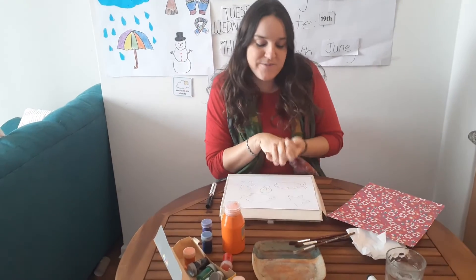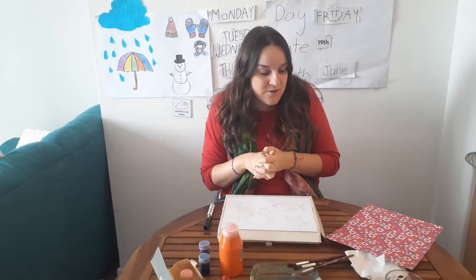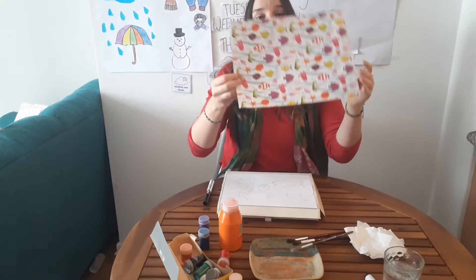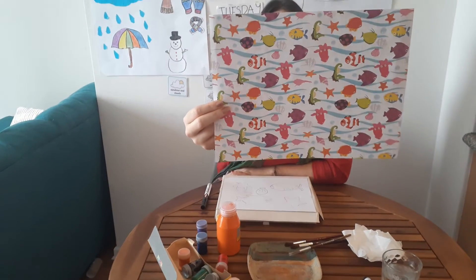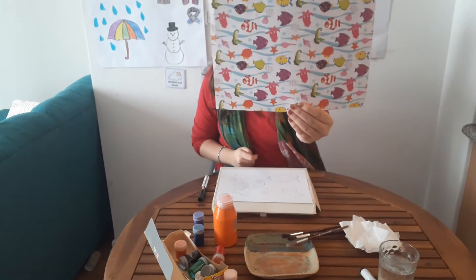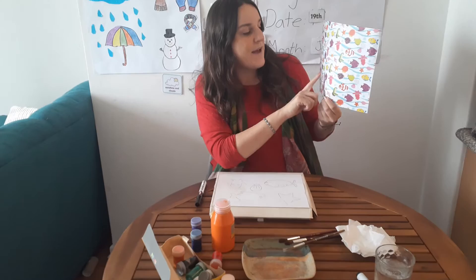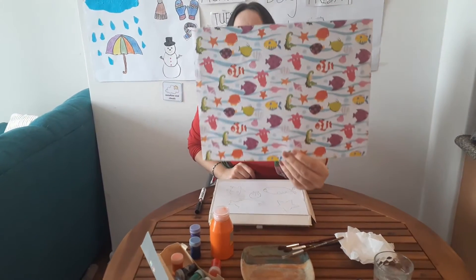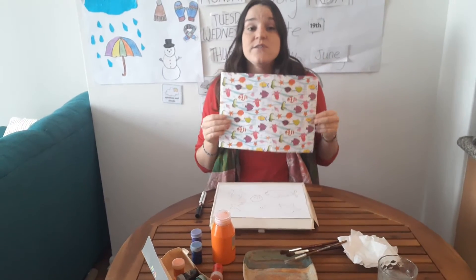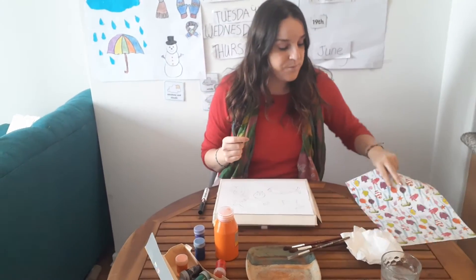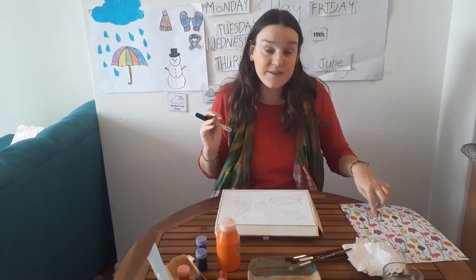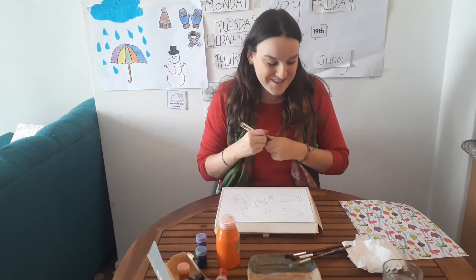Welcome, everyone! Today is Friday and today's art and craft is going to be under the sea animals. We're going to try and create this — we have different types of fishes, starfishes, and octopus. You can draw whatever you like, so first of all we're going to draw some of the under the sea animals.